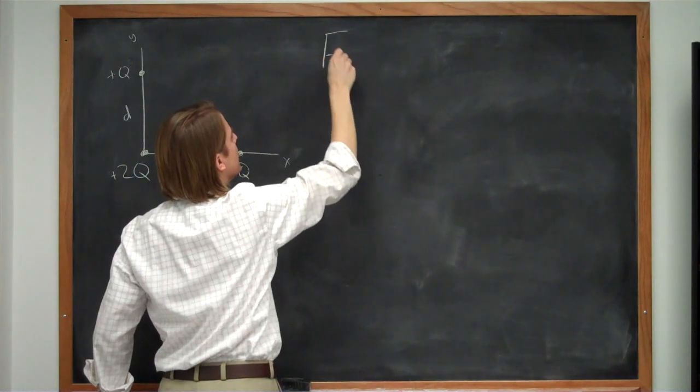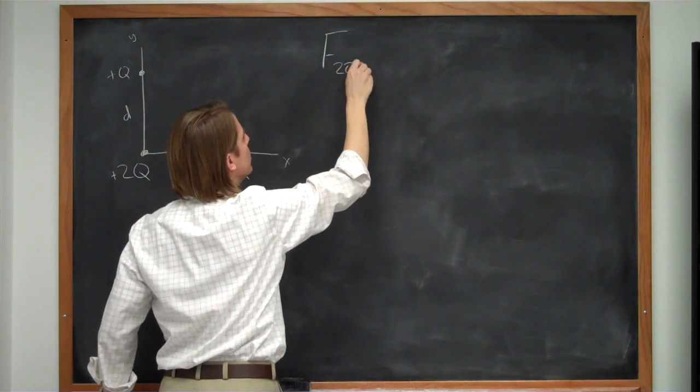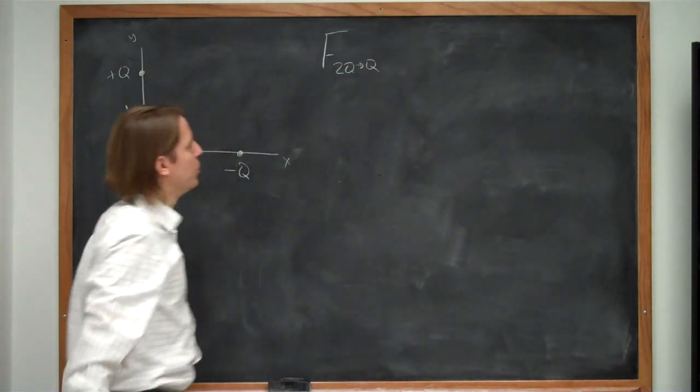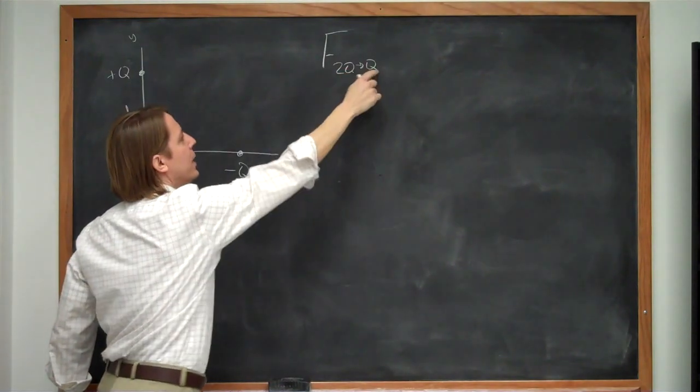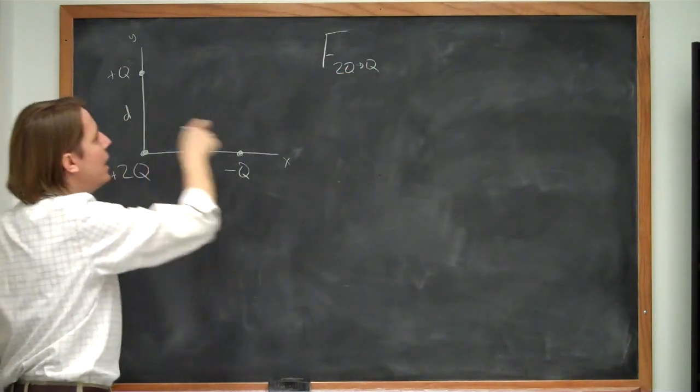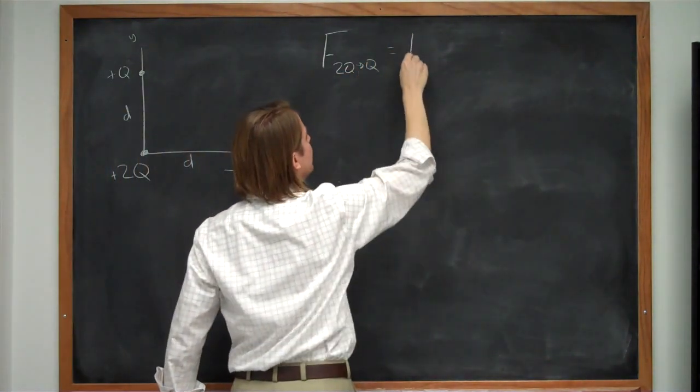So let's start with this one. I like to label them like this, f2q on q. So it means 2q acting on q. So that's going to follow Coulomb's Law. It's going to be k, Coulomb's constant,